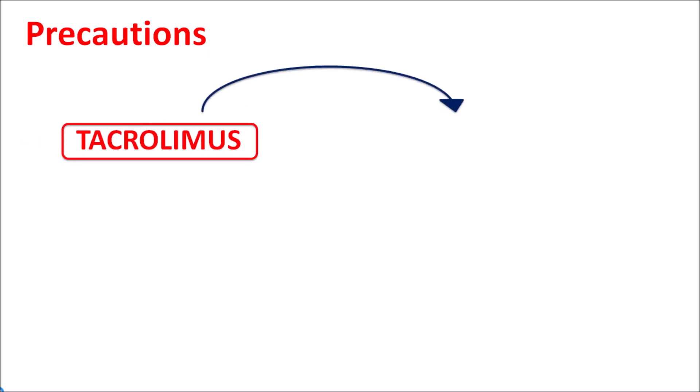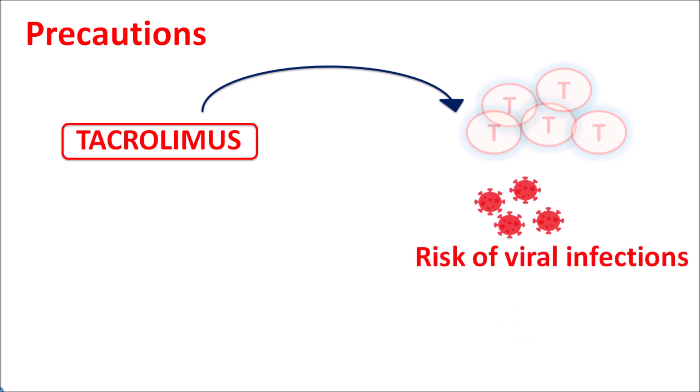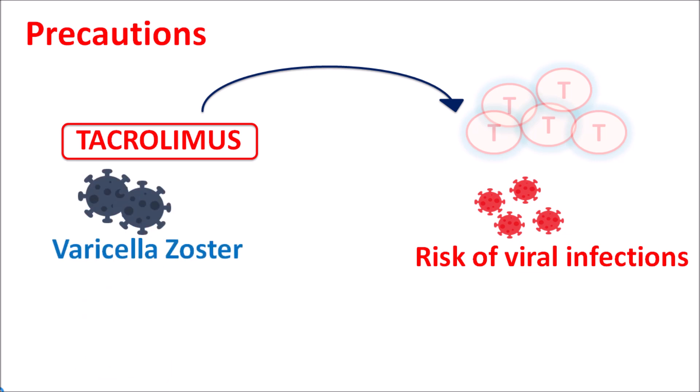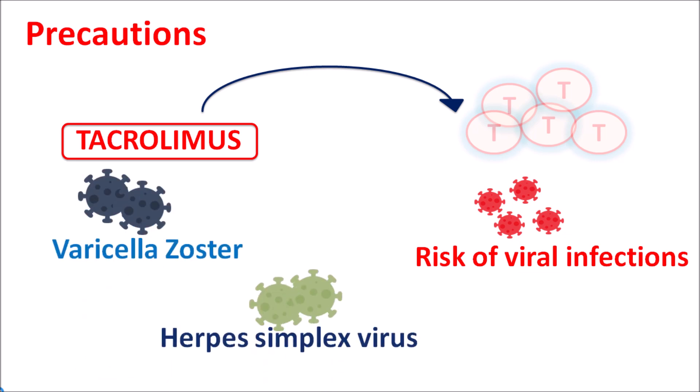Now let us see the precautions of this drug. One important precaution is that tacrolimus reduces immunity by reducing T-cell activity. Because of this reduced immune response, it can increase the risk of infections — particularly viral infections such as varicella zoster and herpes simplex. That's why tacrolimus cream should be used only after removing any topical infection.